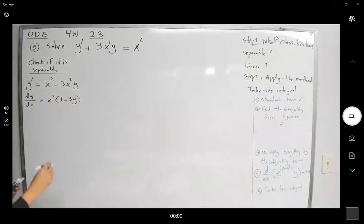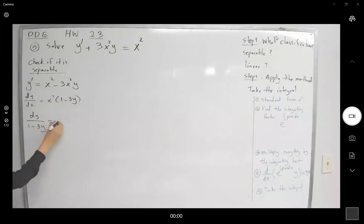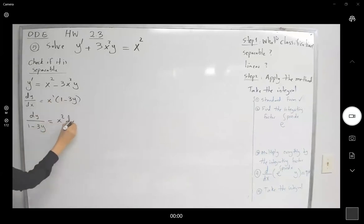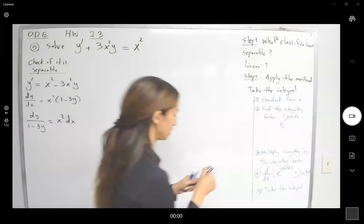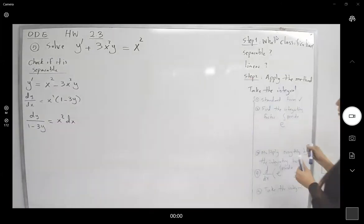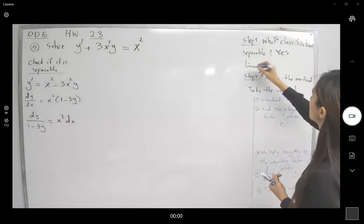Let's do the rest of the algebra. We get dy divided by 1 minus 3y equals x squared dx. Is it separable? Yes. So since it's separable, just take the integral of both sides.